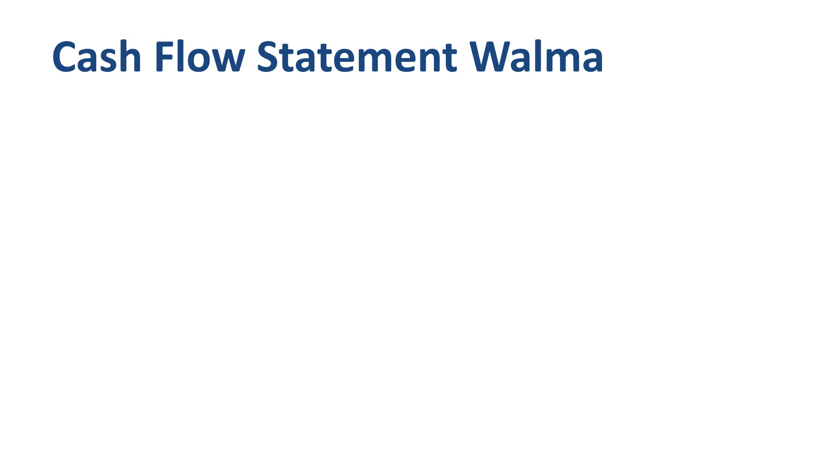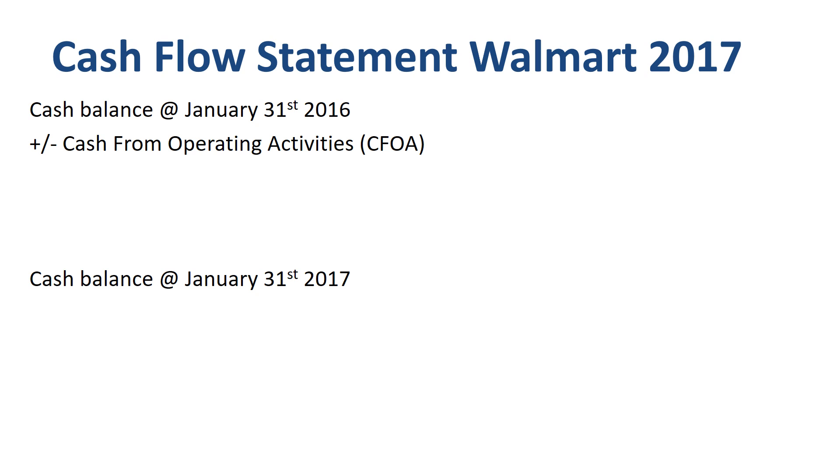What a company shows by publishing a cash flow statement in an annual report is how they got from the cash balance on the previous balance sheet to the cash balance on the latest balance sheet. In the case of Walmart, the fiscal year runs from February 1st to January 31st. The increase or decrease between those two cash balances is called cash flow, and it consists of three main categories: cash from operating activities, cash from investing activities, and cash from financing activities.